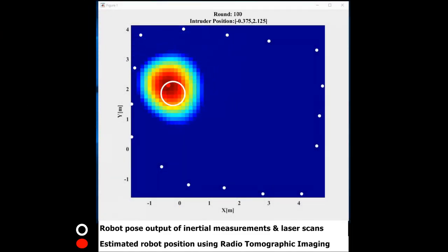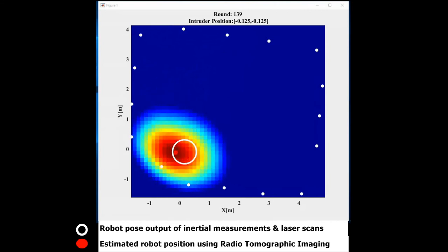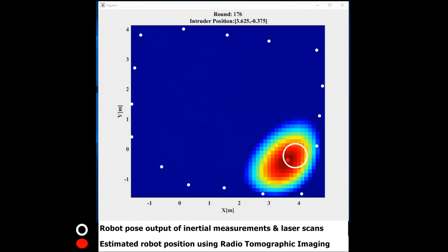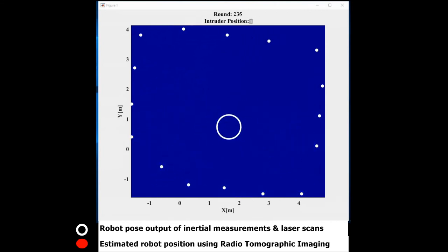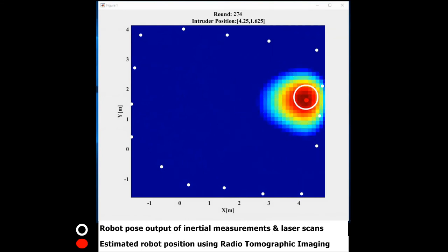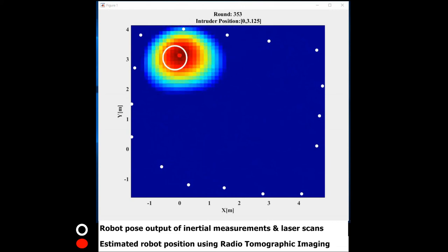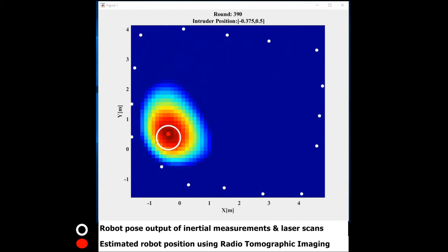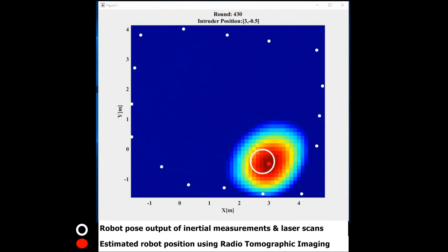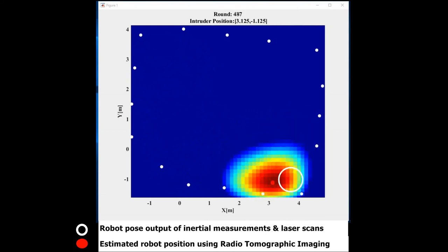In this graphical presentation, the localization results of both radiotomographic imaging and robot sensory are shown. As it can be observed, the two results are coinciding very closely. This demonstrates the high precision of our prototype design and implementation.